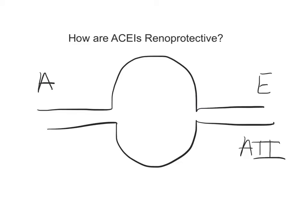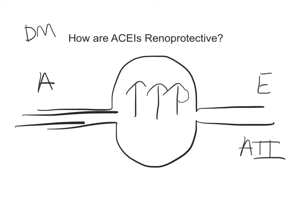Now in this situation, you're starting with a diabetic patient. In diabetic patients, you're starting with a very high flow, high pressure state in the kidney. You can remember this as glucose rushing into the glomerulus causing this high pressure — it's not exactly what's happening, but it helps you remember that you're starting with a high pressure state.